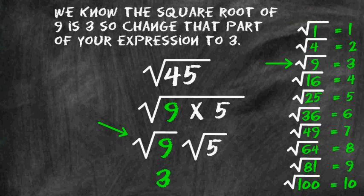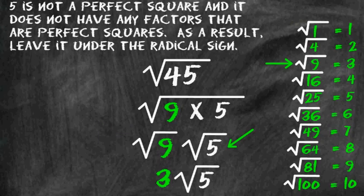Because 5 is not a perfect square and there are no factors of 5 that are a perfect square, we simply write the square root of 5 right underneath, or just bring it down. When the number underneath the radical sign has no factors that are perfect squares, you have your expression in simplest radical form. So the square root of 45 in simplest radical form is 3 times the square root of 5.